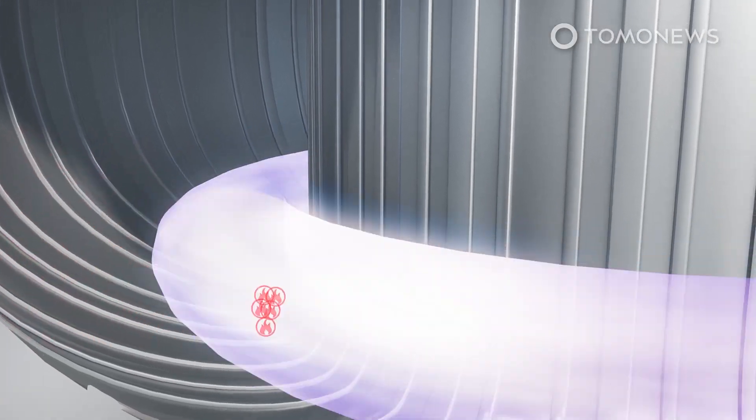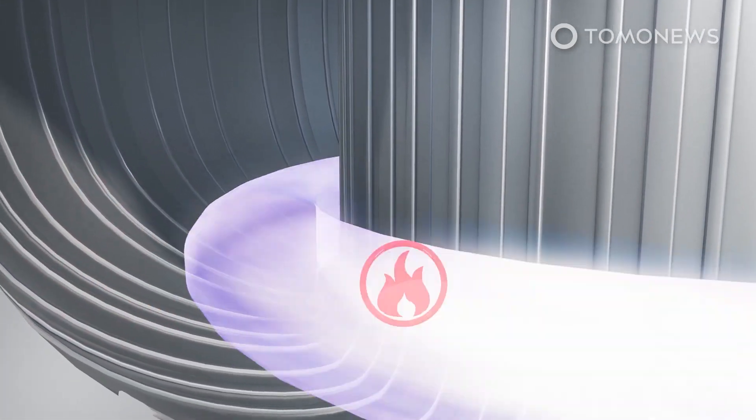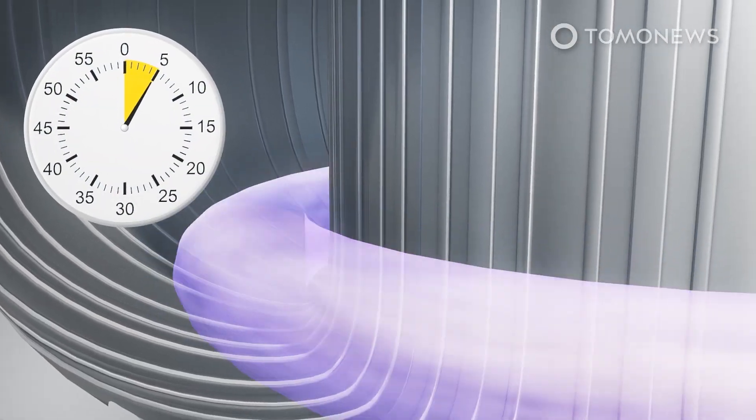The experiment was able to generate 59 megajoules of heat over 5 seconds by fusing two isotopes of hydrogen, known as deuterium and tritium, to form helium gas.